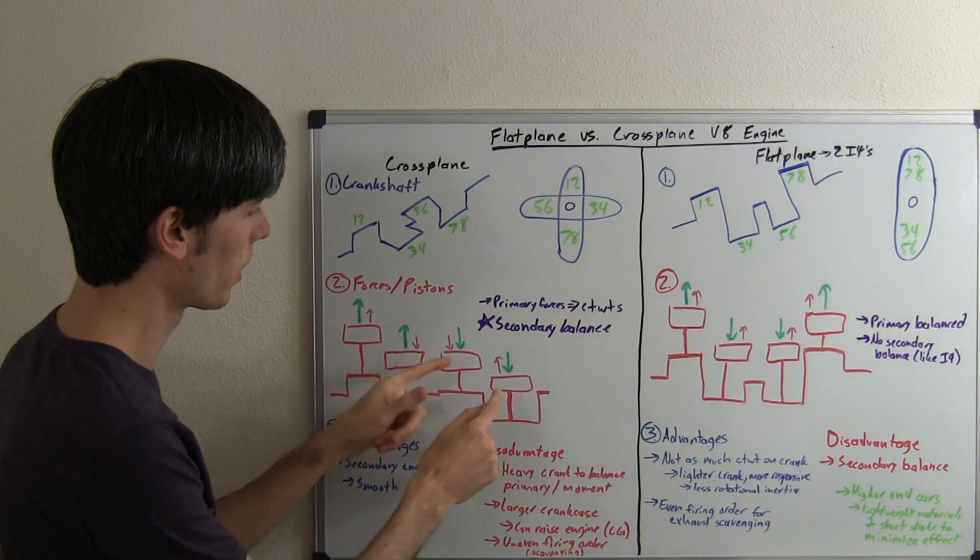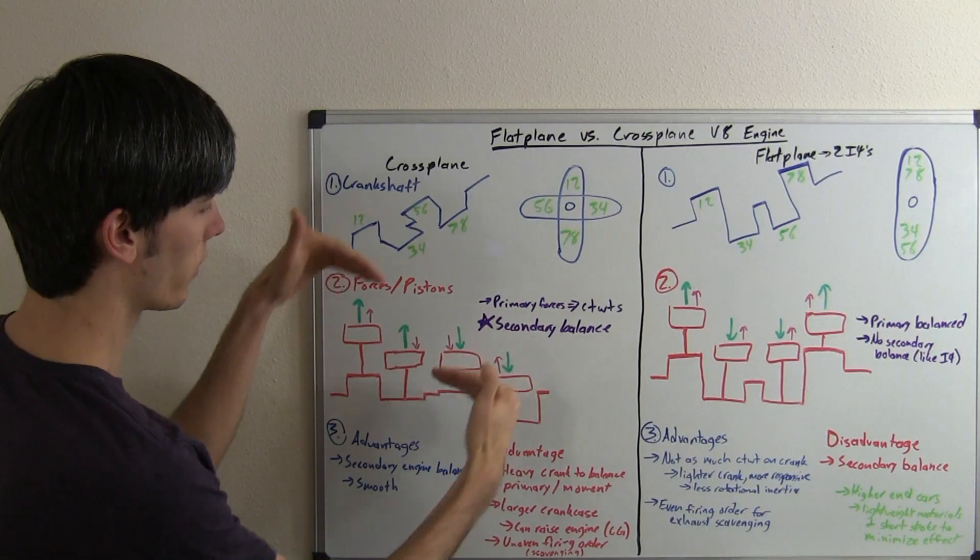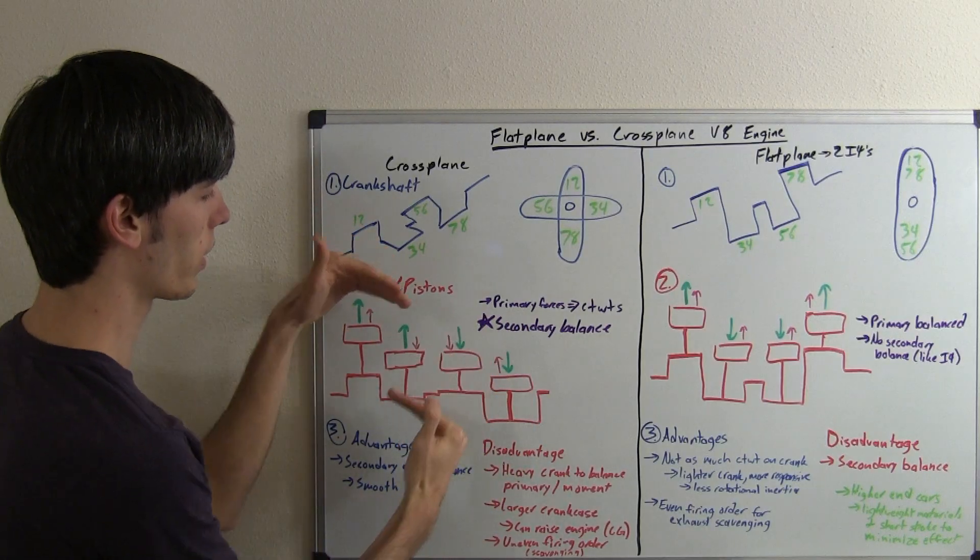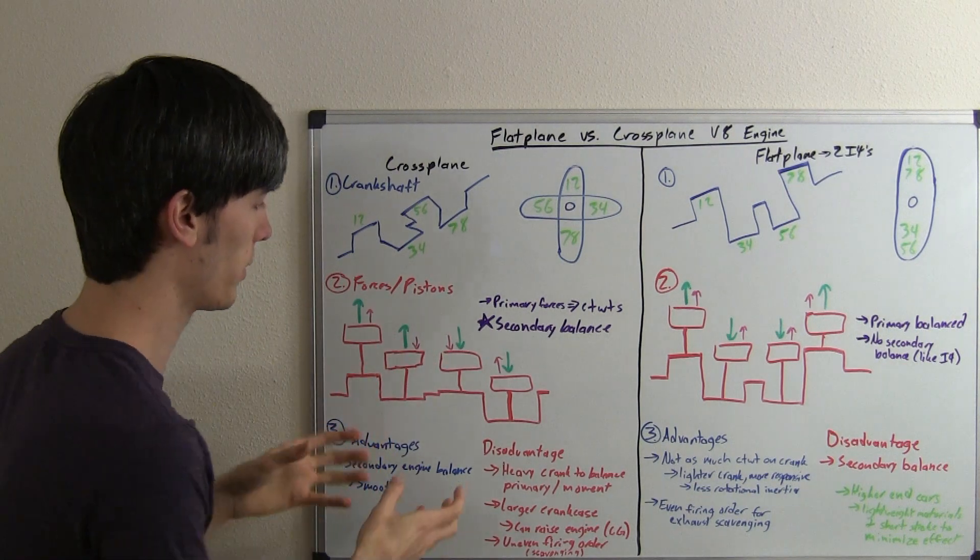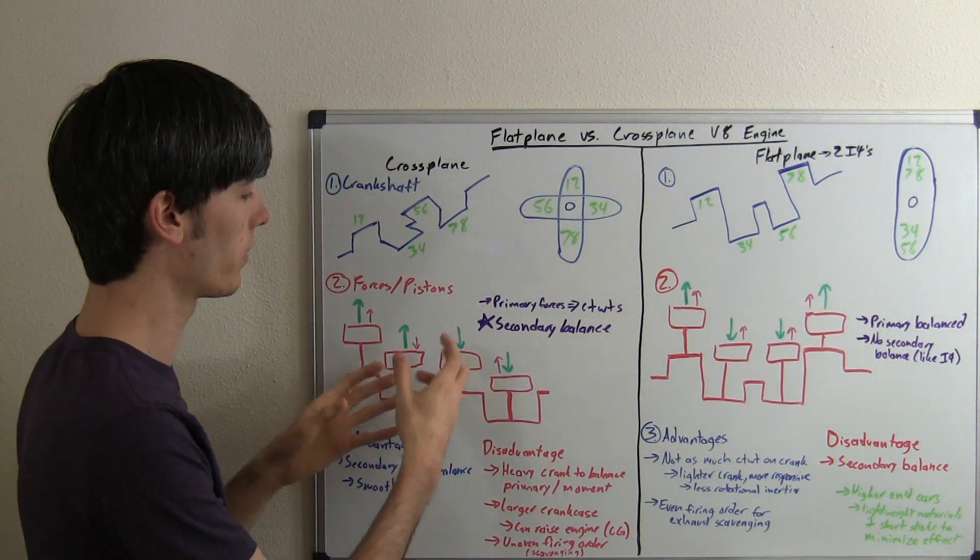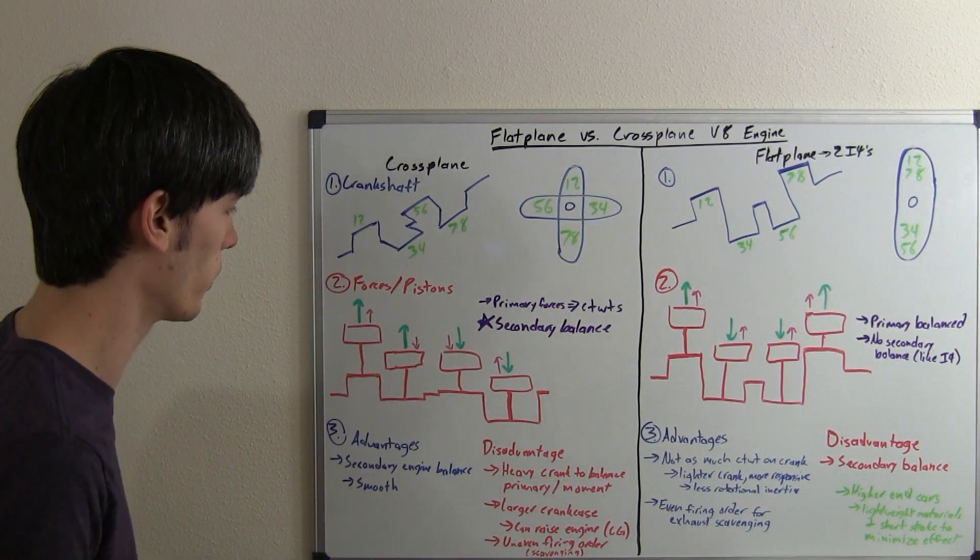you've got your primary forces being balanced out here, except they're offset, so they're going to kind of, it's going to create a moment on this crankshaft. So what you're going to have to do is add counterweight, and so counterweights are going to be what's balancing out these primary forces and balancing out this moment that's going to want to kind of torque this engine.